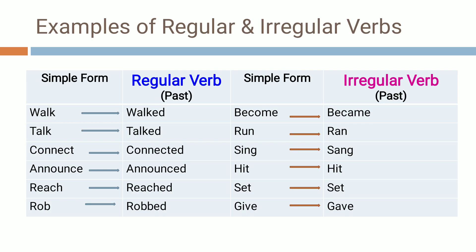Here is an example of regular verbs and irregular verbs. Let us start from the left-hand side — simple form, or regular verb. We also call simple form as present tense verb. For example: walk — past tense will be 'walked'; talked; connected; announced; reached; robed. As you can see in these examples, all the verbs end with 'ed' in the past tense. So these are known as regular verbs of past tense.